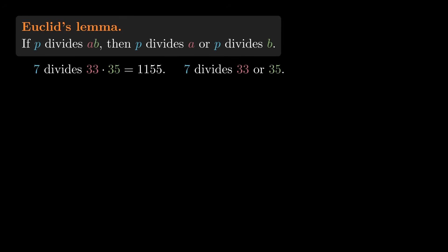Since 7 divides 33 times 35, Euclid's Lemma claims that 7 divides 33 or 35. You can probably tell which one it is. But we're trying to understand why Euclid's Lemma is true in general. So let's think carefully.